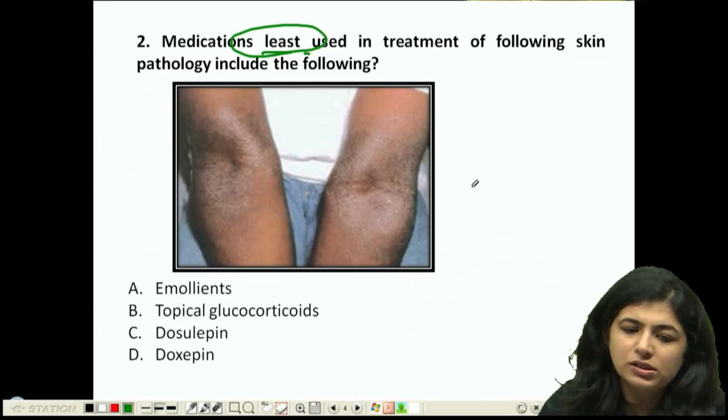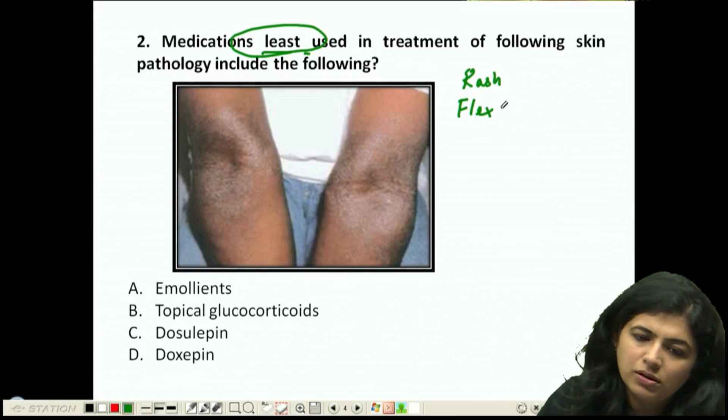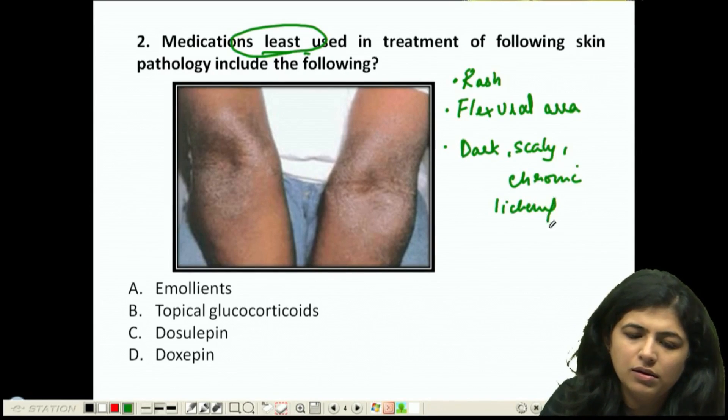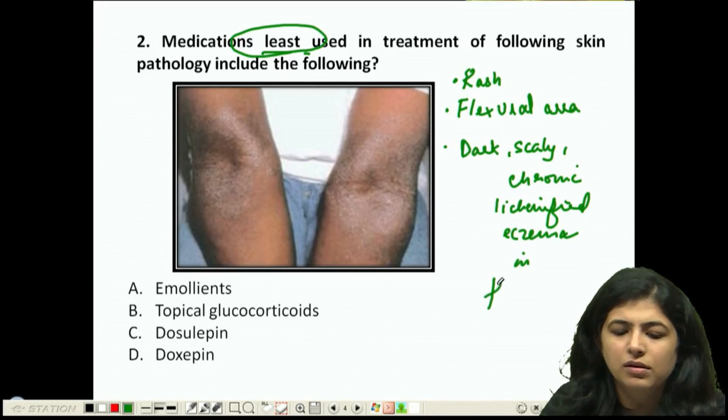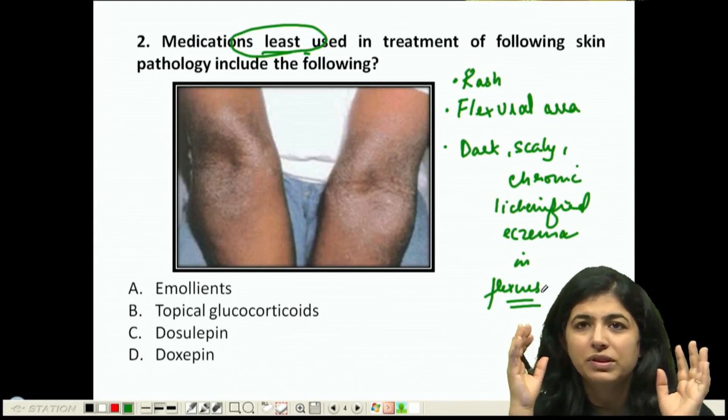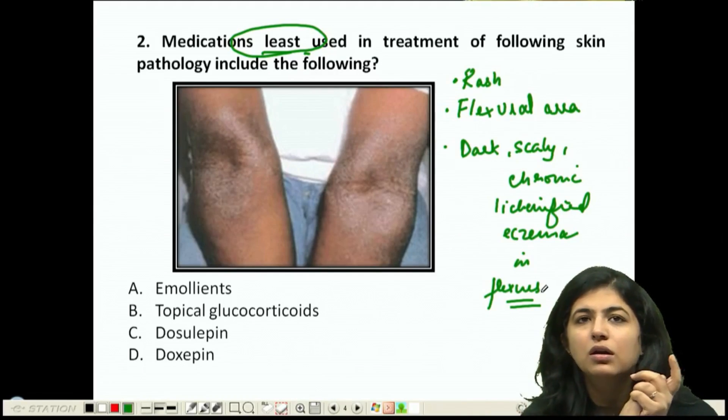Before we go to the medication, let's make a diagnosis. What does it show? It shows a rash involving the flexural area, dark and scaly, looks like a chronic lichenified eczema in the flexures.